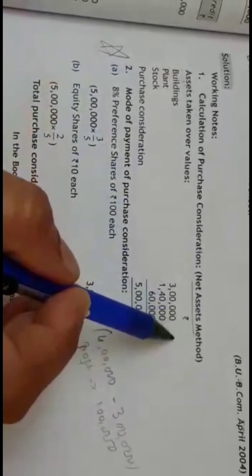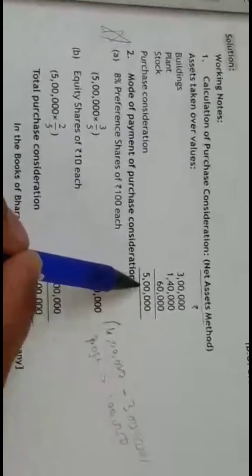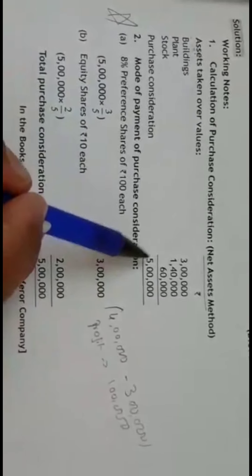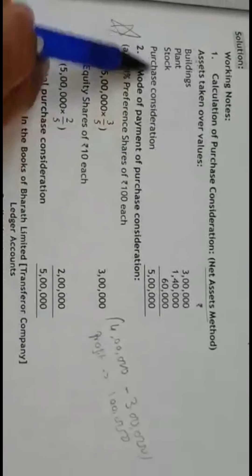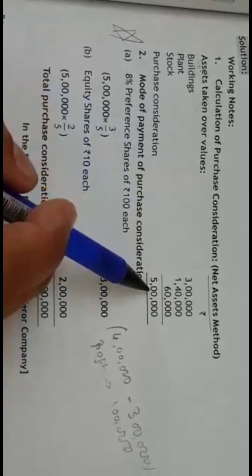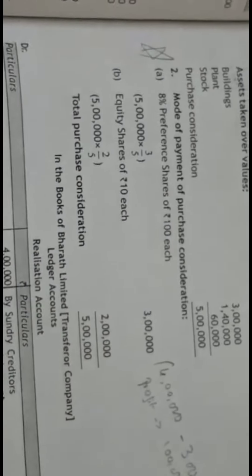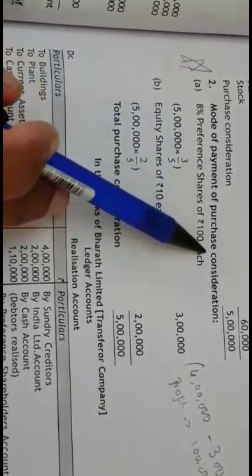Look into the calculation of PC. Which method? Net asset method. Buildings, plant, stock - they have given you the market value. Total you get is 5,00,000 and from this 5,00,000 actually we were supposed to deduct liabilities taken over but no liabilities are taken over in this problem. So the PC will be only Rs. 5,00,000.